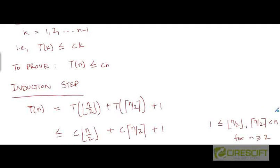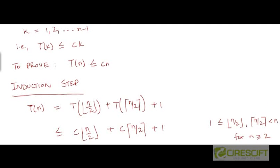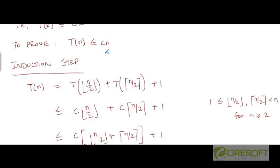So what's the induction step? We need to prove that T of n is less than or equal to C times n. So let's start from T of n. T of n is equal to T of the floor of n by 2 plus T of the ceiling of n by 2 plus 1. We are given this in the definition of the recurrence itself.